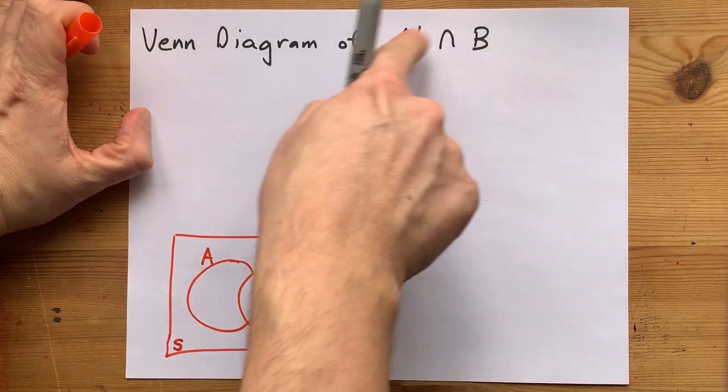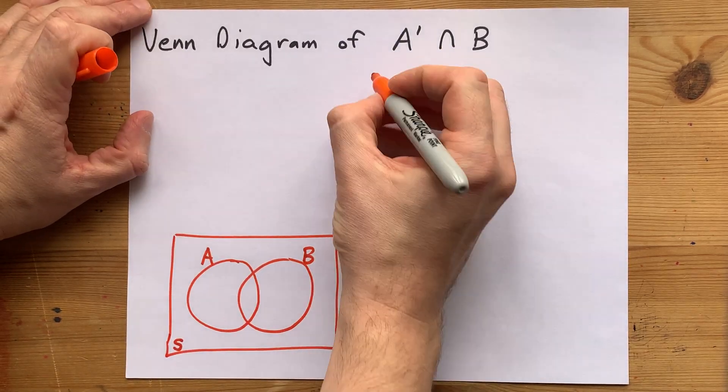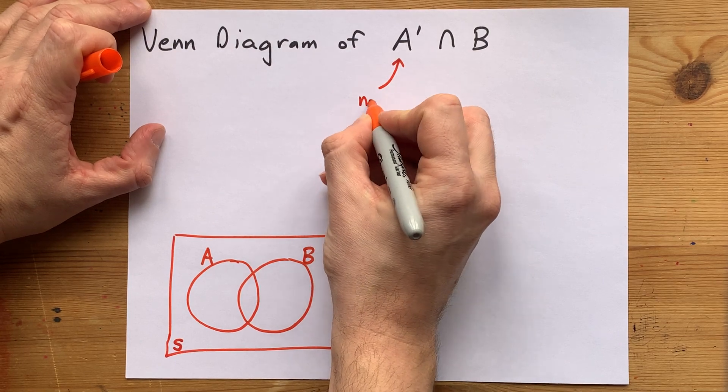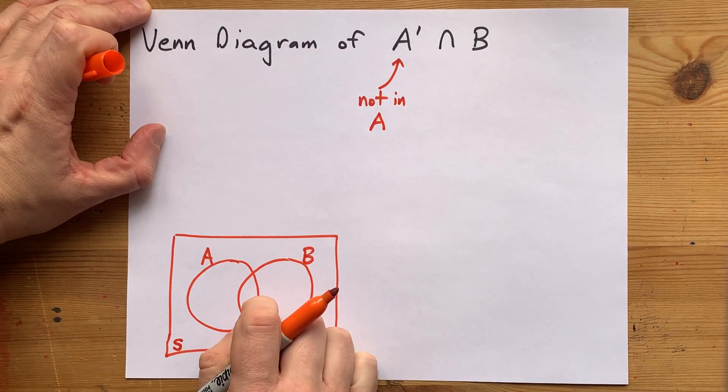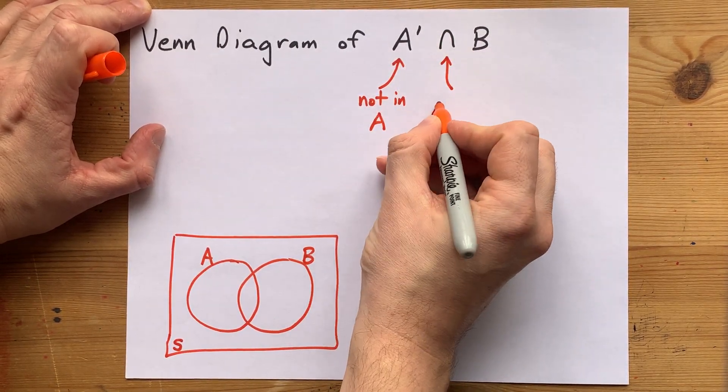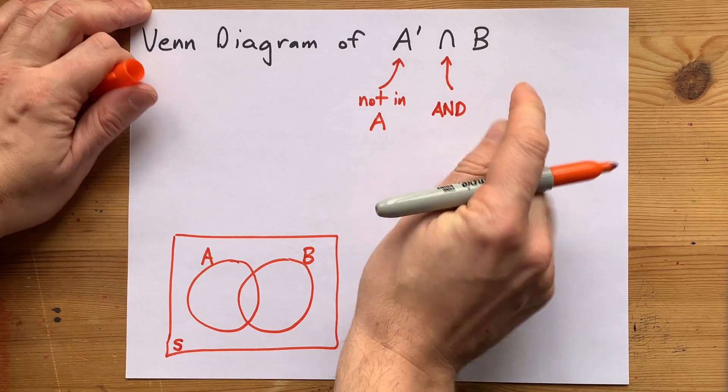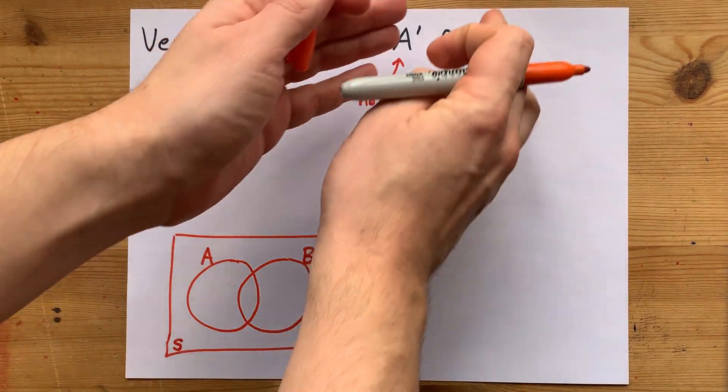But how do you do this one here, A complement intersect B? Well, A complement is math code for stuff that is not inside of the circle A. And intersect is math for and, meaning that both of these have to be true for you to shade that section of the Venn diagram.